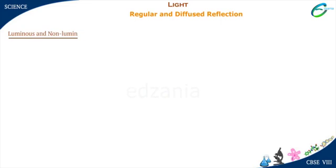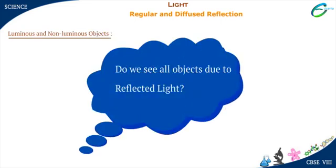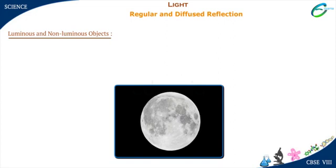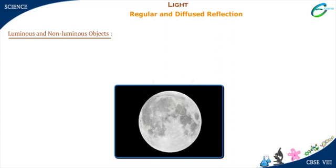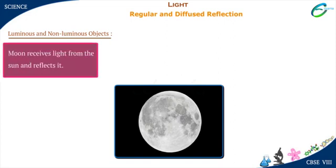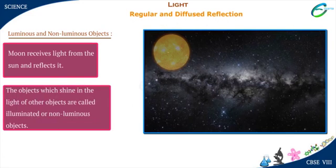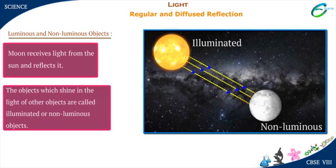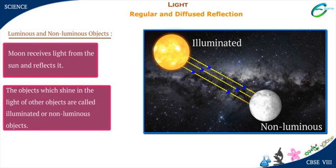Luminous and non-luminous objects. Do we see all objects due to reflected light? Nearly everything we see around us is due to reflected light. For example, the Moon — it receives light from the Sun and reflects it. That is how we see the Moon.